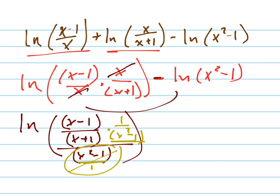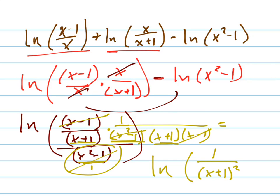And this right here factors into x plus 1, x minus 1. So I can get rid of that. And then these cancel. And so I get the natural log of 1 over x plus 1 squared.